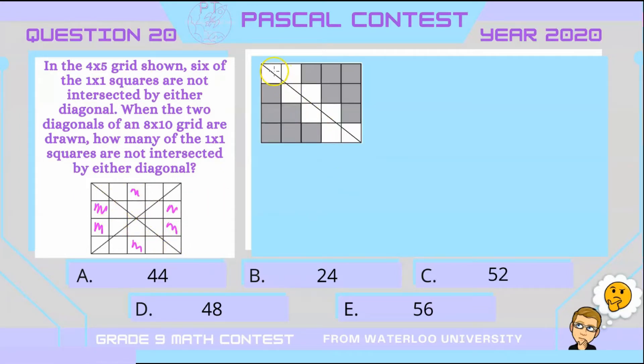And when we do that, if we were to just take, for example, this diagonal here, then we can see that there is a total of 12 1x1 squares which are not intersected by that diagonal.